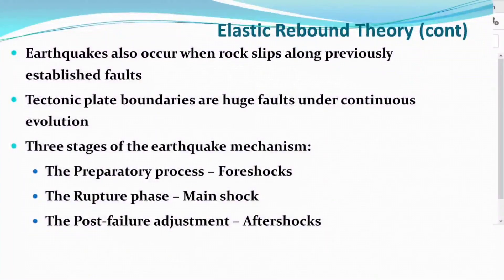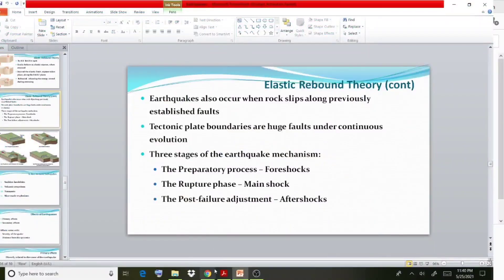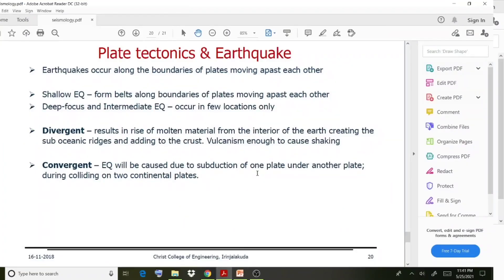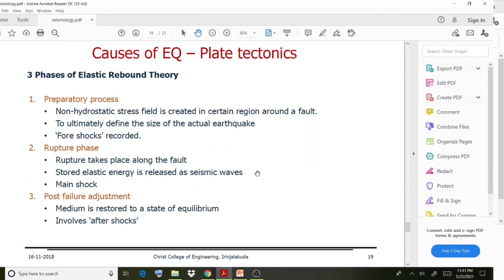We can go through three phases of the elastic rebound theory mechanism. The first one is the preparatory process — that is, the initial step. A non-hydrostatic stress field is created in a certain region around a fault. At the initial level, stress is developed.